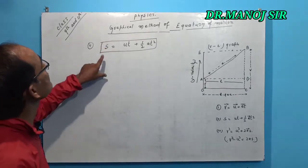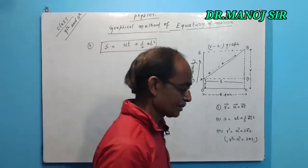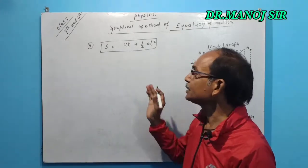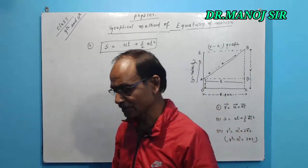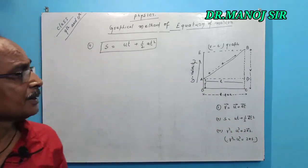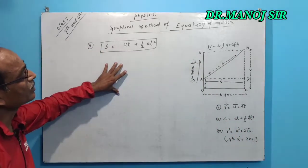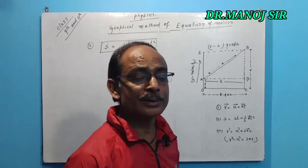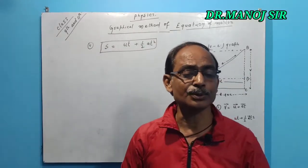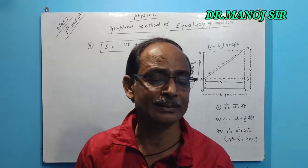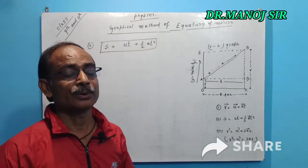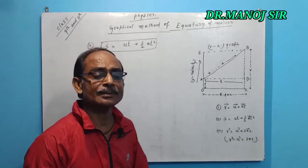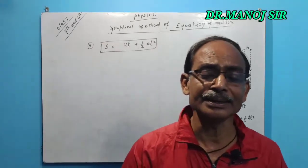Students, this s equals u t plus half a t squared, the second equation of motion that can be derived by graphical method. This equation is very important for any student of any class.